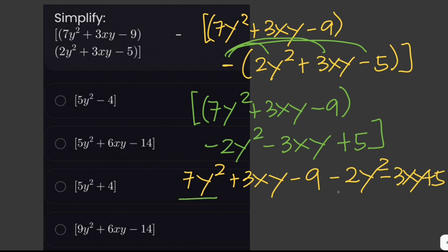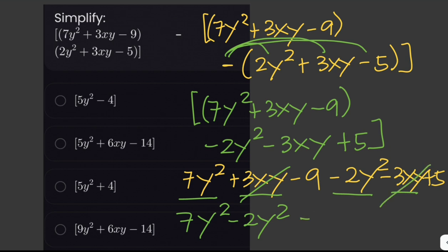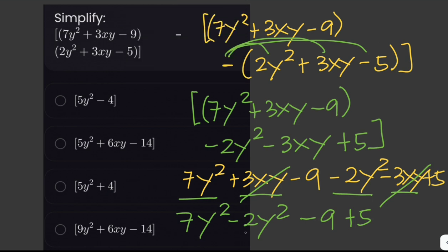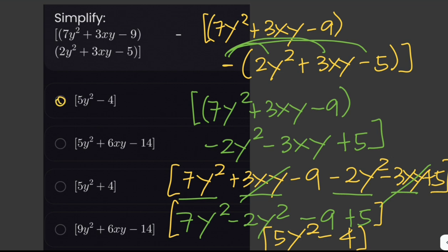Now we group like terms: 7y squared and negative 2y squared combine to give 5y squared. Positive 3xy and negative 3xy cancel out to 0. Then negative 9 plus 5 gives negative 4. So the final simplified answer is 5y squared minus 4.